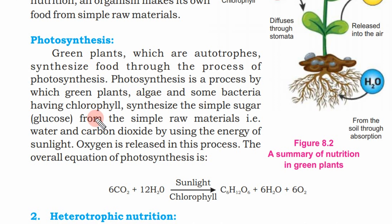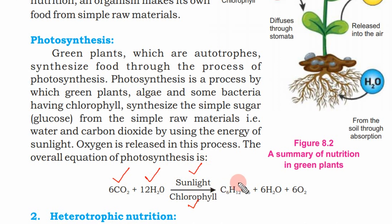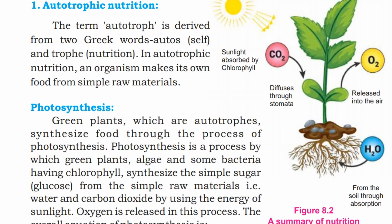The raw materials are water, carbon dioxide, and sunlight energy, and oxygen is released. The overall equation of photosynthesis is: 6CO₂ + 12H₂O (with sunlight and chlorophyll) → glucose + 6H₂O + 6O₂. That is, 6 molecules of carbon dioxide and 12 molecules of water produce glucose, 6 molecules of water, and 6 molecules of oxygen.